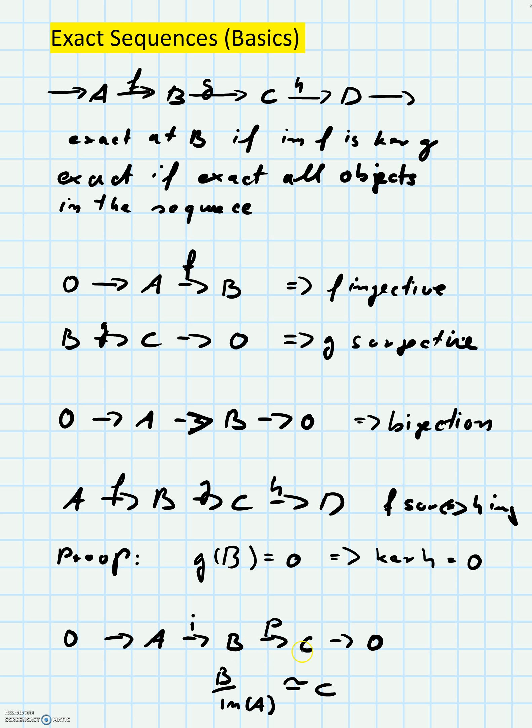And this morphism from B to C is certainly surjective. So what you get is an injection of A into B, and the image of A has to be the kernel of this map P, so you get an isomorphism of the quotient group B factored by the image of A with C.